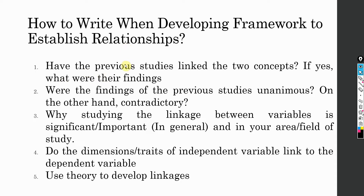We have already talked about what if there is no existing study linking the two concepts. But still, you need to link the concepts to establish an argument that yes, these variables can be linked with each other. To do so, you have to link the dimensions and traits of one variable with the other variable. We are going to have a detailed session on how to write a literature review when you do not have any existing literature — a detailed session on the same is also available on the channel.